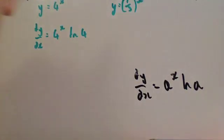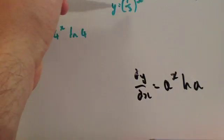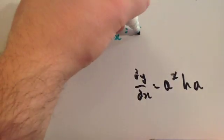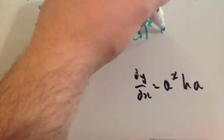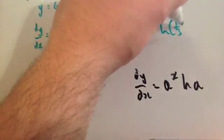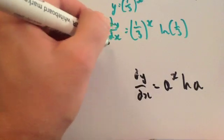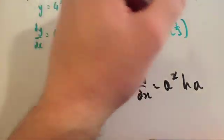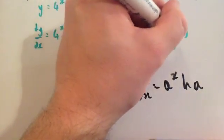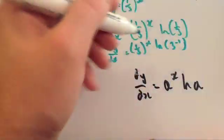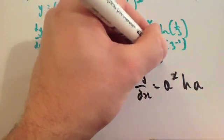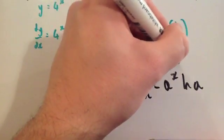If you were to differentiate something like y equals one-third to the x, you'd again use the standard result, giving dy/dx equals one-third to the x times natural log of one-third. The natural log of one-third can be rearranged: it equals natural log of 3 to the minus 1, and bringing the minus power down gives dy/dx equals minus natural log of 3 times one-third to the x.